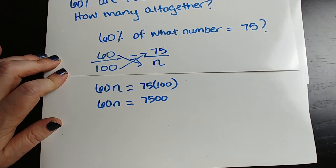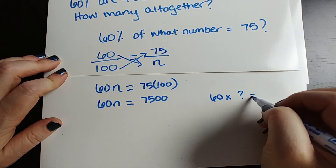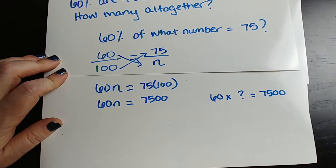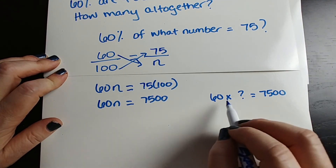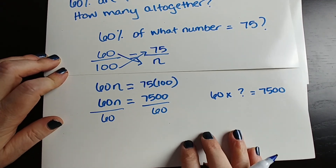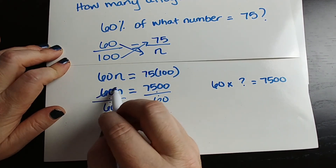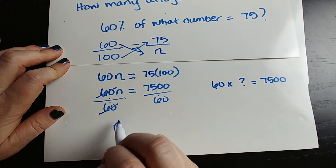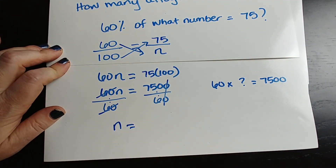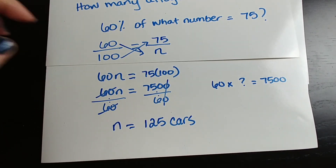This is similar to fact families, or you may have learned cross multiply and divide. Either way, if you know 60 times some number equals 7,500, your fact family says you find this number by doing 7,500 divided by 60. So we divide both sides by 60 — fraction bars just mean division. Divide by 10 first to get 750 divided by 6, and when you do that division, you get 125 total cars in the parking lot.